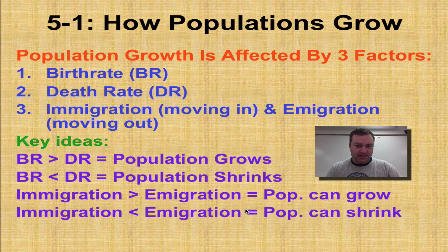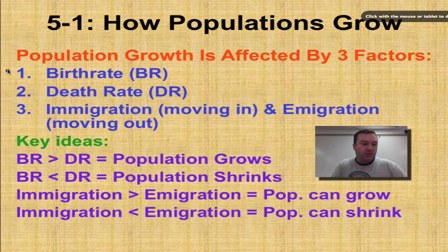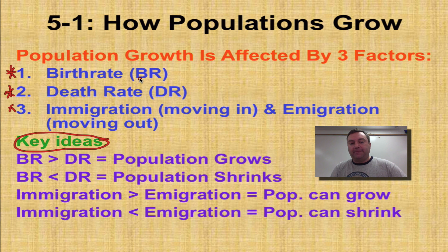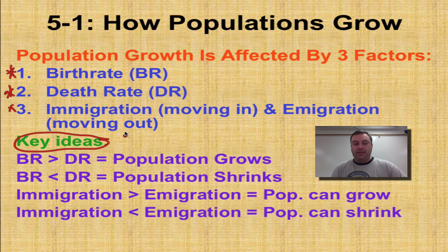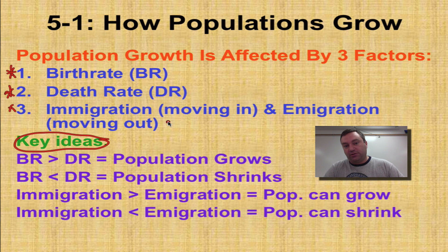The growth rate is affected by three key factors — mark these in your notes with a star. First, birth rate (BR): the higher the birth rate, the higher the growth rate. Second, death rate: the higher the death rate, the slower the growth rate. Third, immigration and emigration. In the United States our population growth is mainly coming from immigration. In other parts of the world, populations are shrinking because people are moving away — that's emigration.